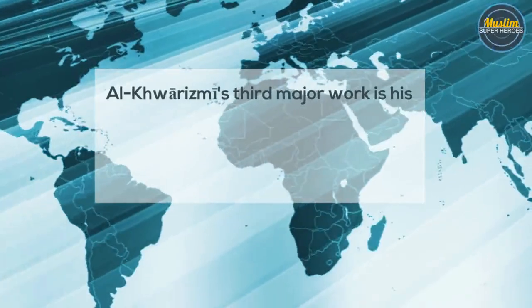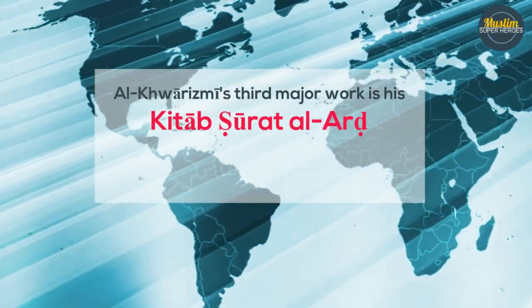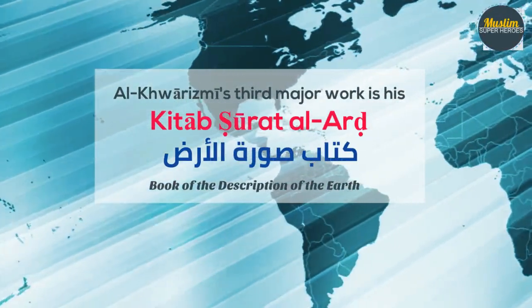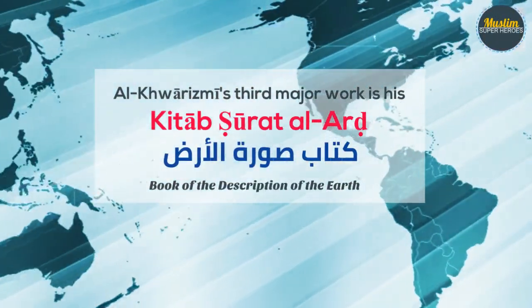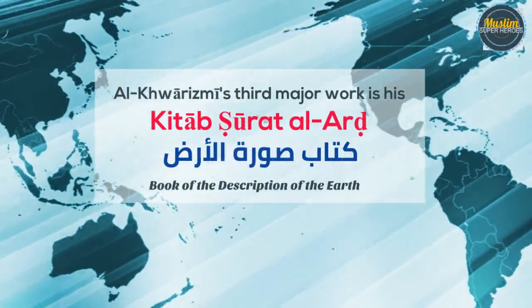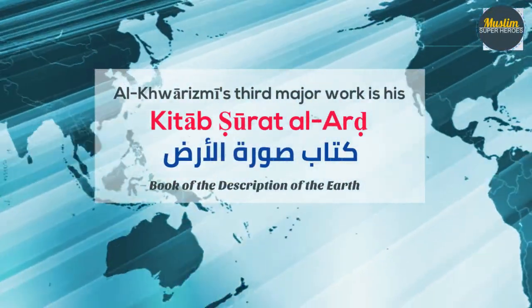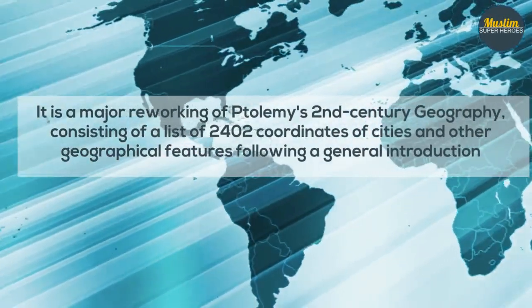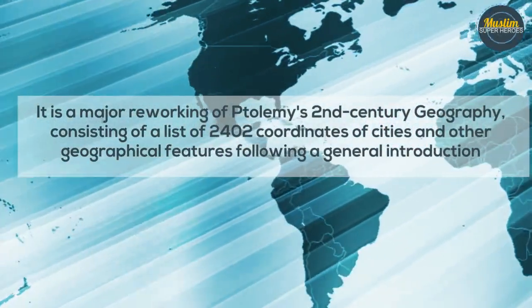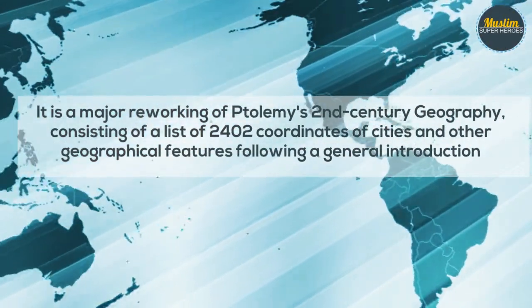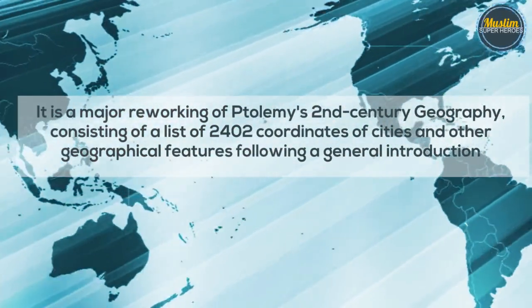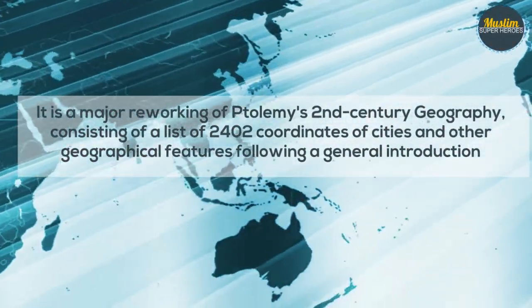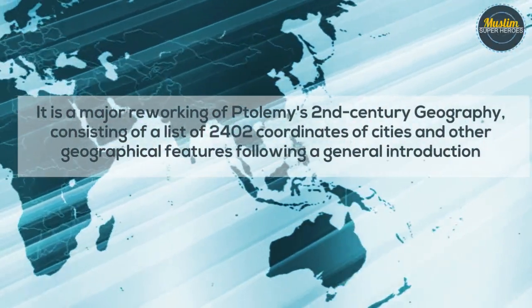Al-Khwarizmi's third major work is his Kitab Surat al-Ard, meaning Book of the Description of the Earth. It is a major reworking of Ptolemy's second-century geography, consisting of a list of 2,402 coordinates of cities and other geographical features following a general introduction.